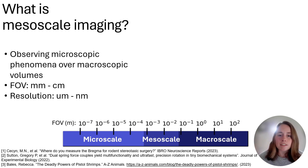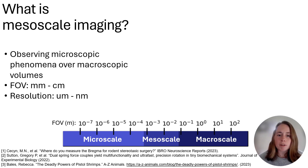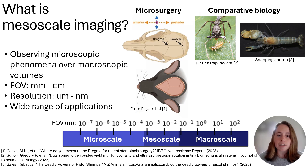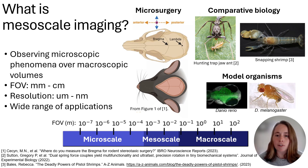While few imaging systems are developed to specifically target this scale, there are still a lot of exciting application spaces. A few that we've been exploring are microsurgery, including stereotaxic rodent surgery, applications in comparative biology such as studying the flexion of exoskeletons of small invertebrates, and behavior and morphology in model organisms such as fruit flies and zebrafish.